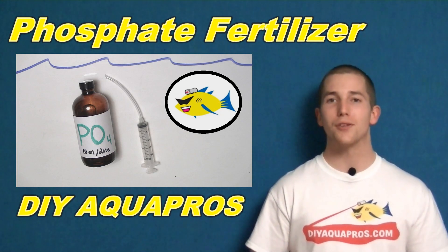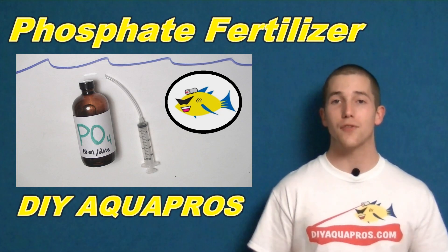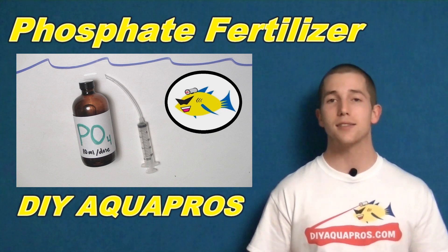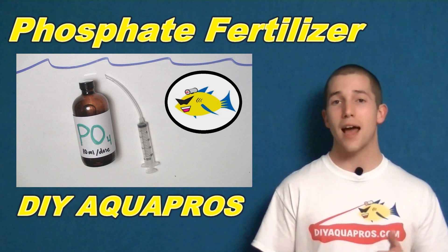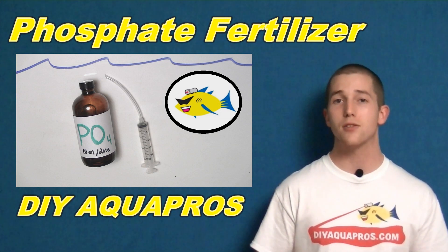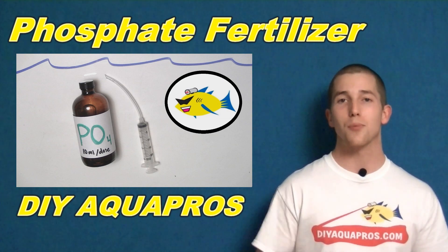Hey everybody, Mike here from DIY Aquapros. Today we're going to show you how to make your own phosphate fertilizer solution for use in your planted tank. Now dosing phosphate can be a double-edged sword. If you dose too much, it can easily cause an algae bloom, but at the same time, you can also give your plants the boost they require. Let's start the project.